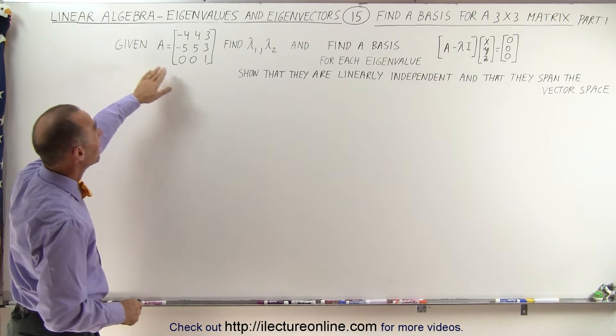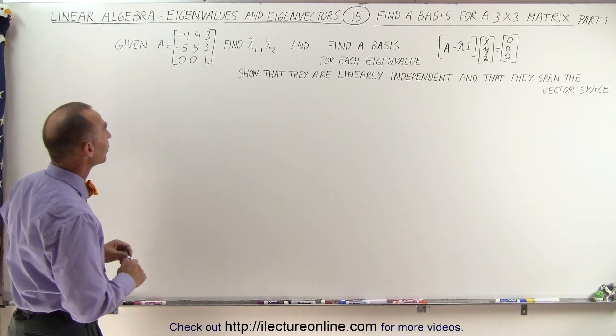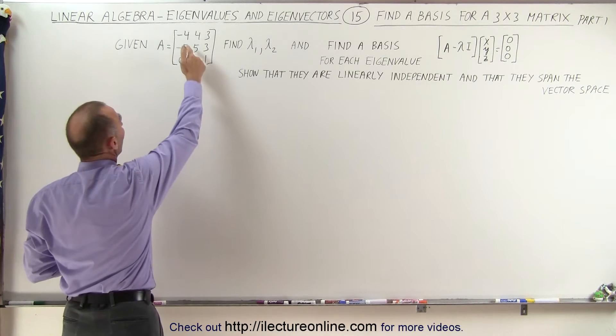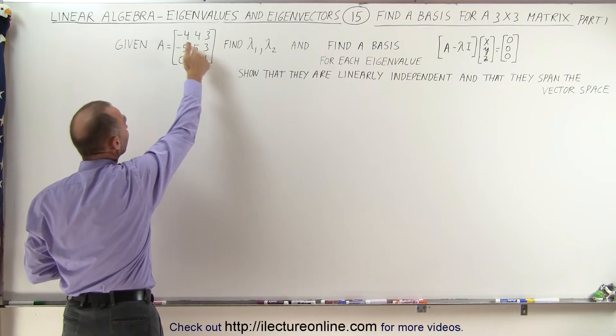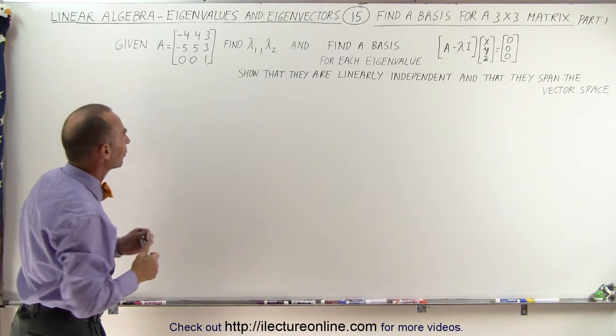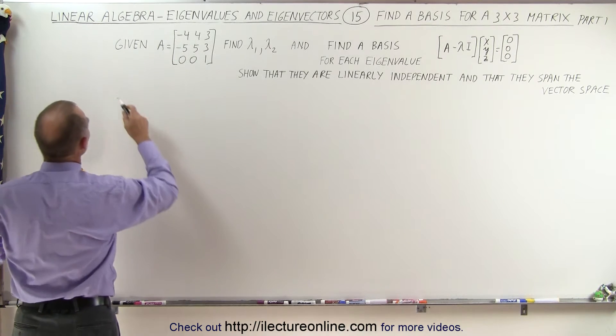So starting with this 3 by 3, let's find the eigenvalues. We do that by subtracting the unknown eigenvalues from the diagonals and then find the determinant of the matrix and set it equal to 0. I'm going to do the following.